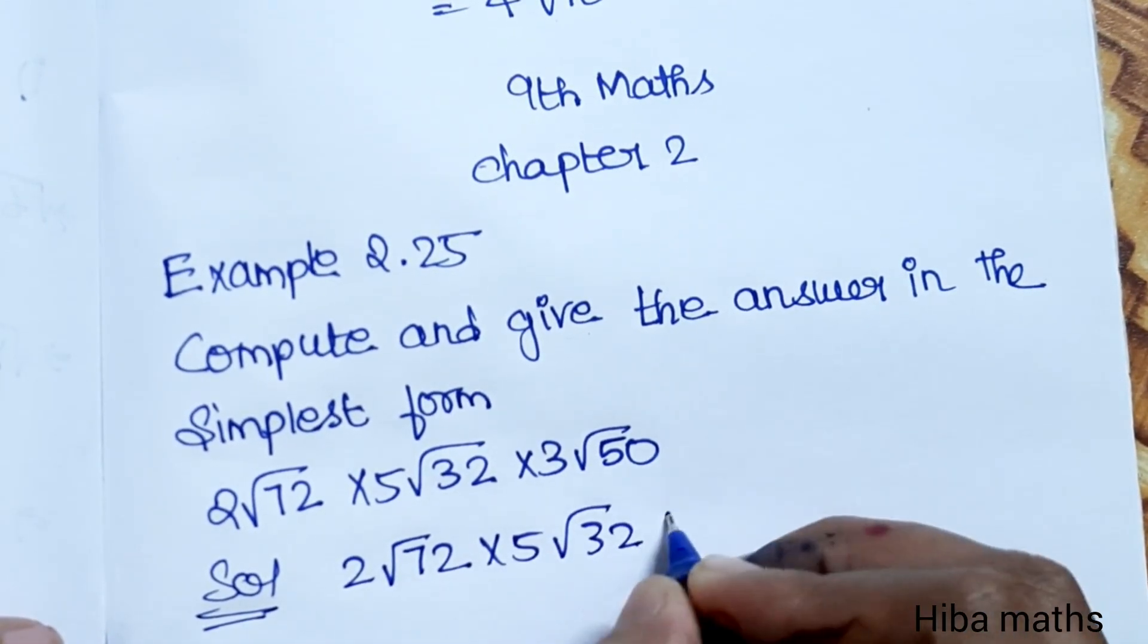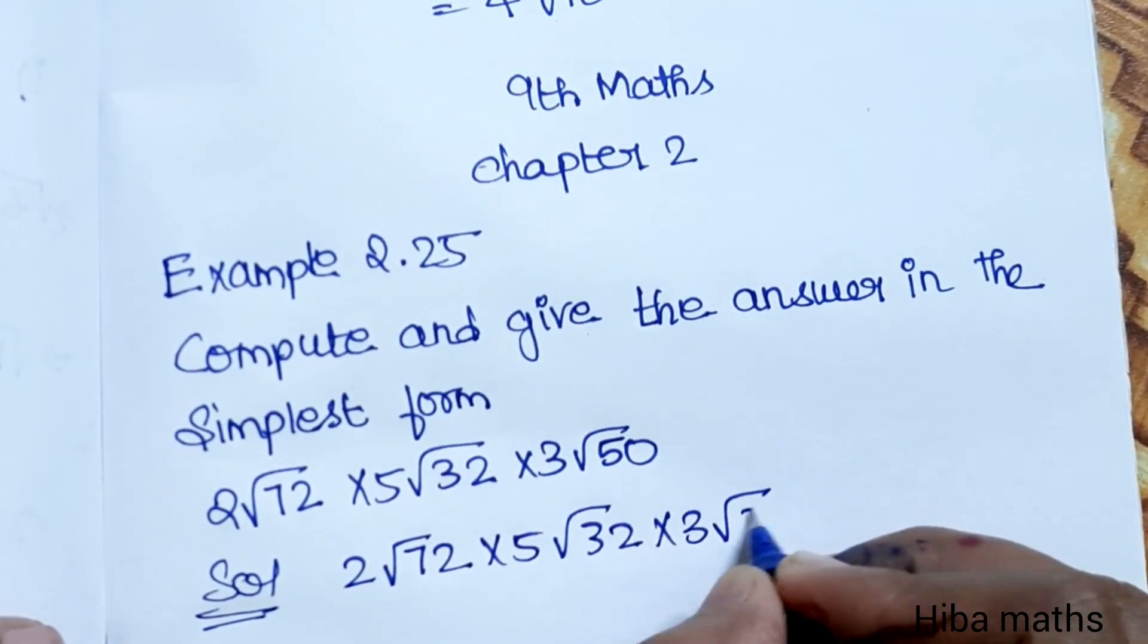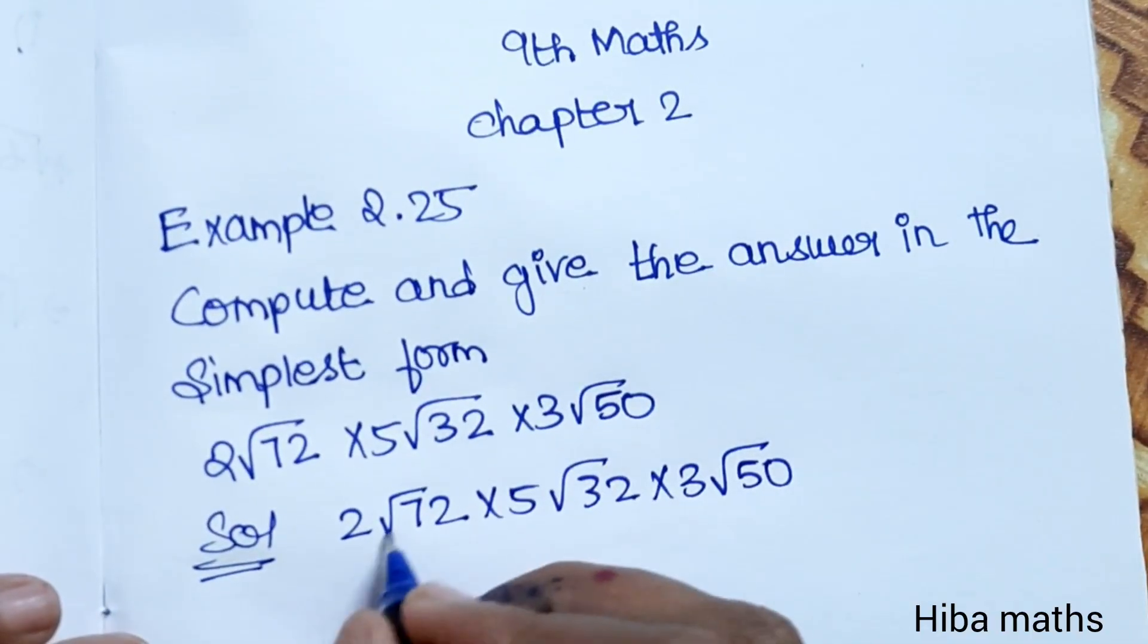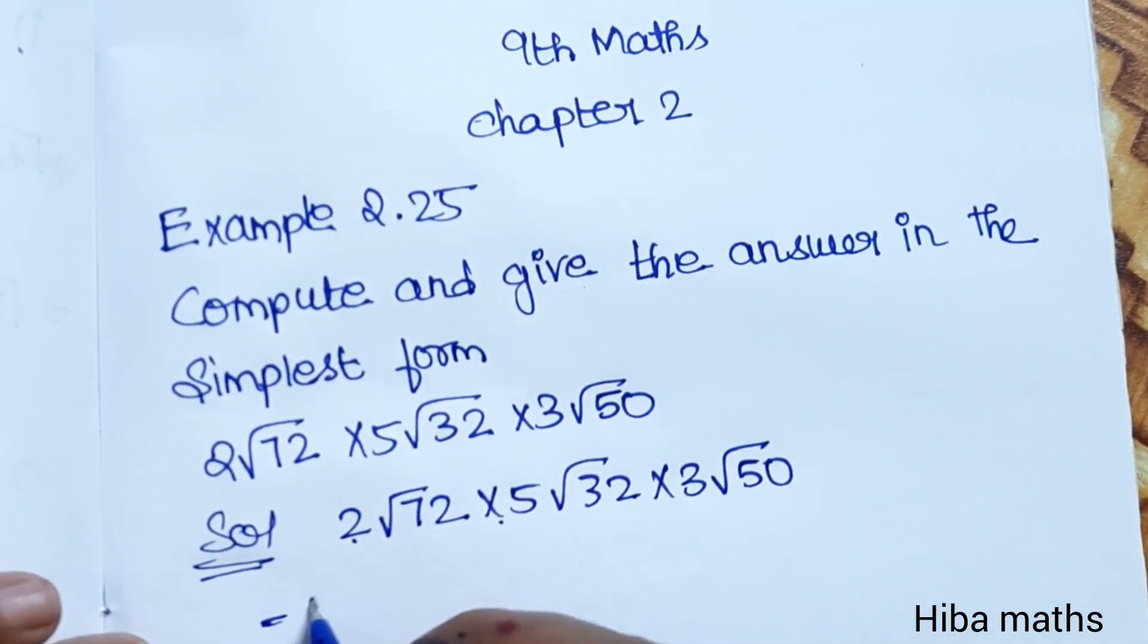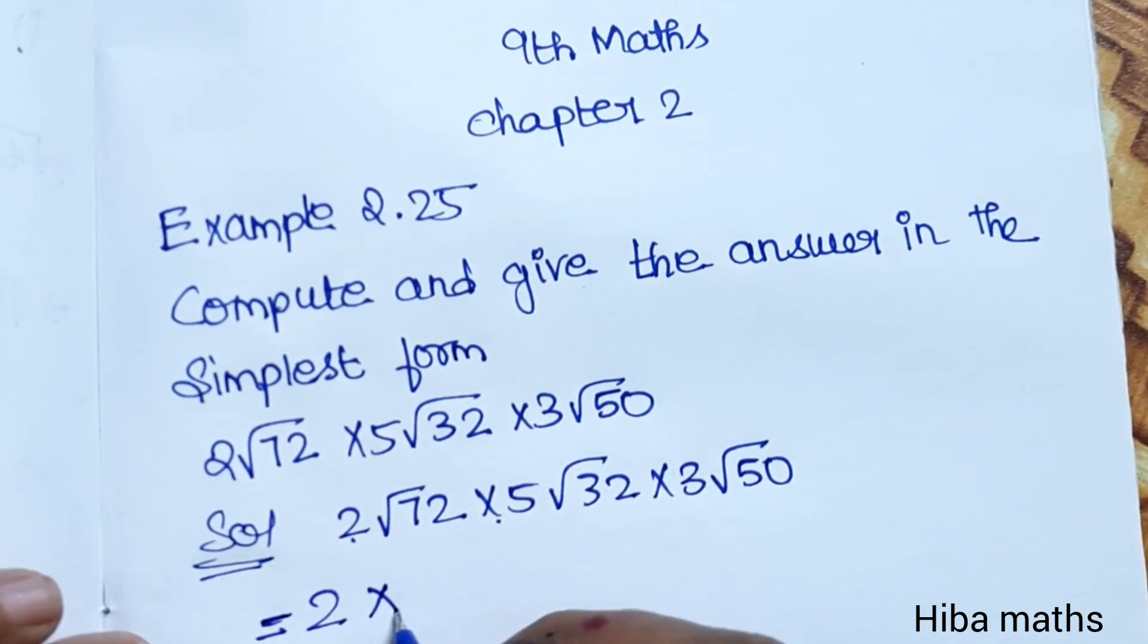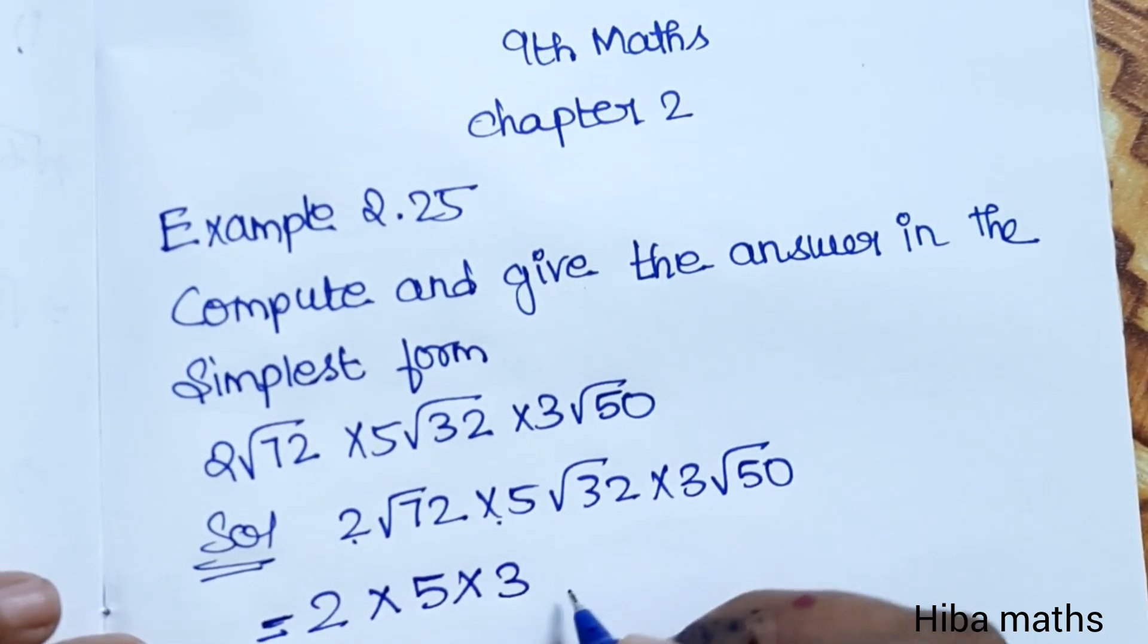2√72, 5√32, 3√50. Now if we multiply the surds, the coefficient: 2 into 5 into 3.